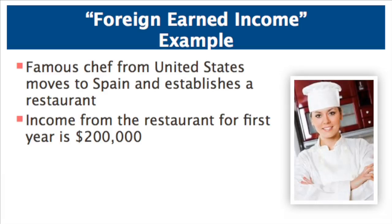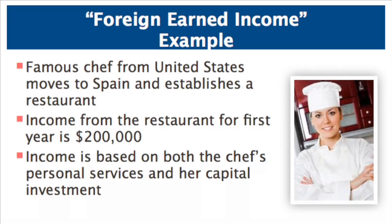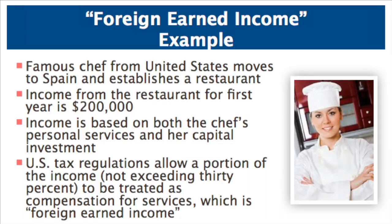Consider the following example. A famous chef from the United States moves to Madrid, Spain to open a restaurant. Her net income from the restaurant for the first year is $200,000. That income is based on both the chef's personal services as well as her capital investment in the restaurant — stoves, ovens, and furnishings necessary for the restaurant's operations. Because determining the precise portion of income attributable to services would be very difficult, U.S. tax regulations allow a portion of the income, up to a maximum of 30%, to be treated as compensation for services. Thus, in this example, a maximum of $60,000 of the $200,000 of restaurant income would be attributable to the chef's personal services and would be foreign earned income subject to the exclusion.